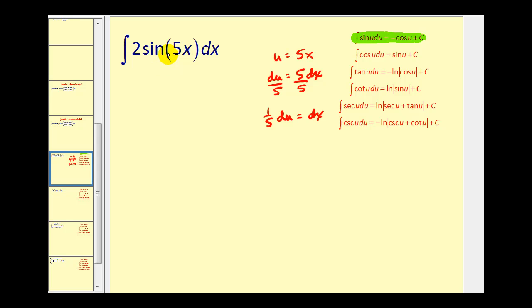Now let's rewrite this in terms of u. We have the integral and then we have 2 times dx is equal to (1/5) du. So we'll have 2 times (1/5) and then du, and sine 5x is just going to be sine u.